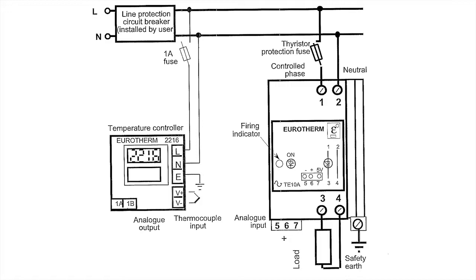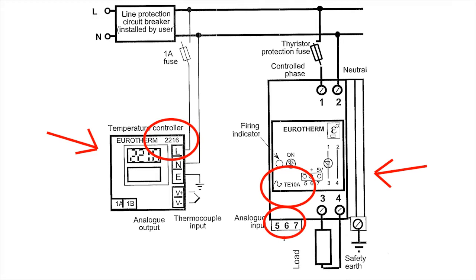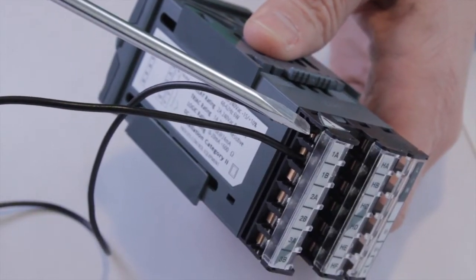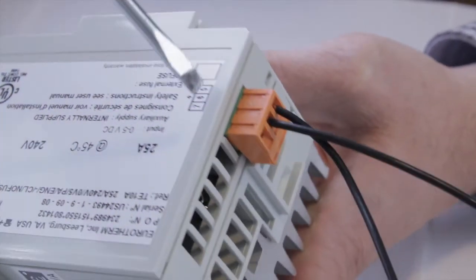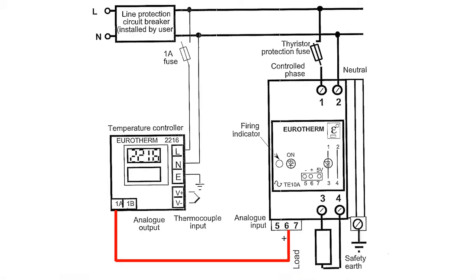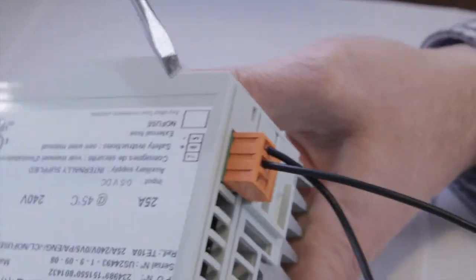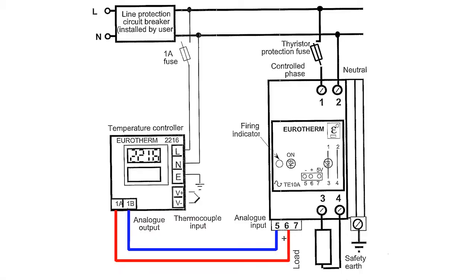In the wiring diagram that you see, you will note that we are using a Eurotherm 2216E temperature controller and a Eurotherm TE10A power controller with a DC analog input command signal. First, you will wire terminal 1A positive of the temperature controller to terminal 6 positive of the power controller. Next, terminal 1B negative of the temperature controller to terminal 5 negative of the power controller. This completes the output wiring for this style of control.